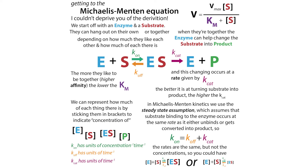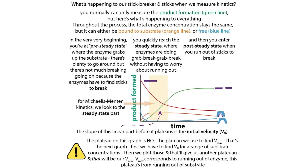You can measure the velocity at a bunch of different substrate concentrations to find your Michaelis-Menten constants. You want to measure the velocity at this beginning point — not the burst state where things are trying to just find each other, but in the steady state part. In the steady state, the enzymes are doing that grab, break, grab, break without having to worry about running out. Then you enter the post-steady state where you start to run out, and you don't want to measure there — you want to measure right here in this linear range.